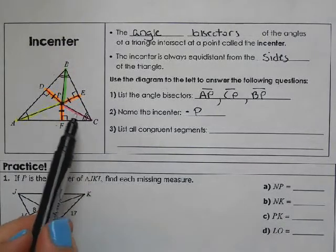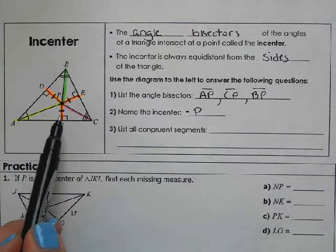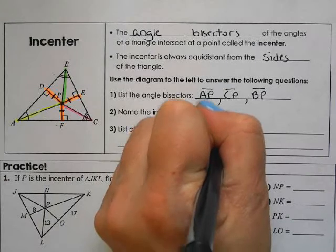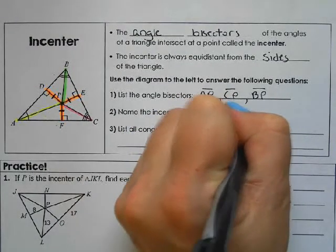So if this looks familiar to the angle bisector problems, here's your two congruent segments, your angle bisectors. So the congruent segments would be DP, EP, and FP.